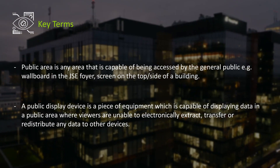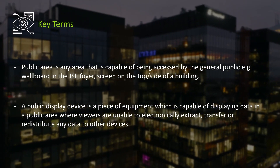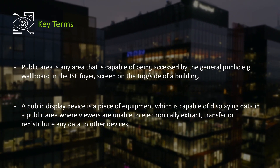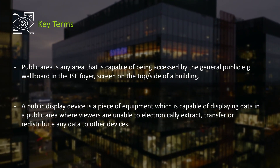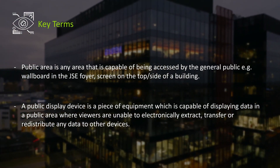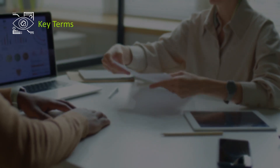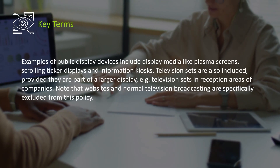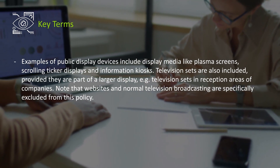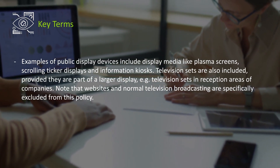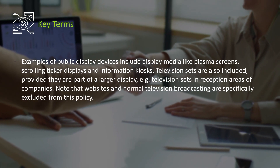A public display device is a piece of equipment which is capable of displaying data in a public area, where viewers are unable to electronically extract, transfer, or redistribute any data to other devices. Examples of public display devices include display media like plasma screens, scrolling ticker displays, and information kiosks.